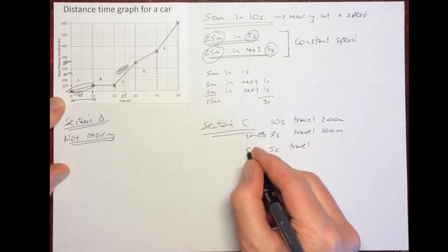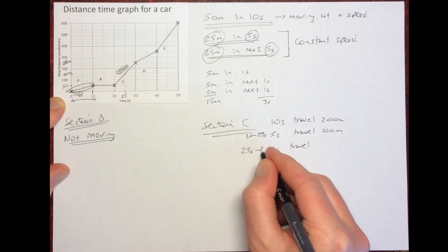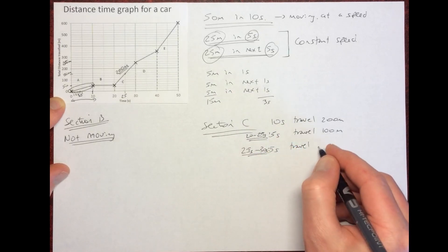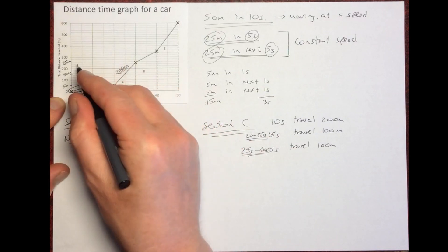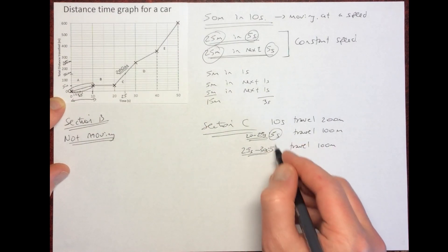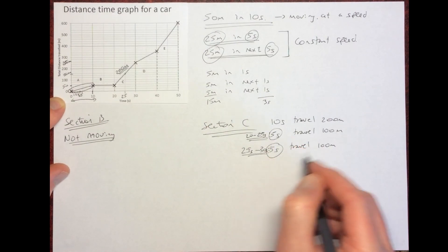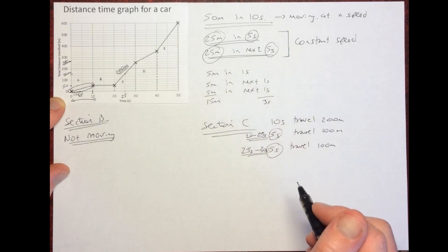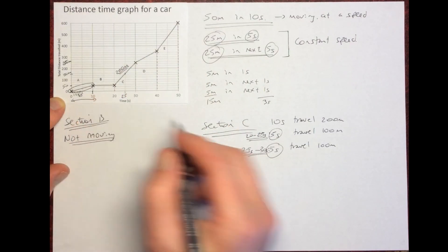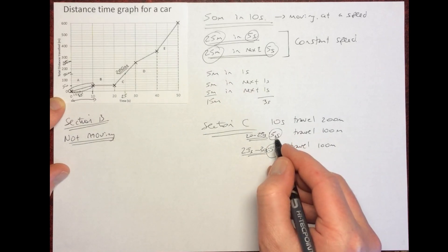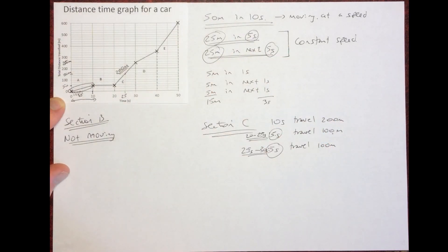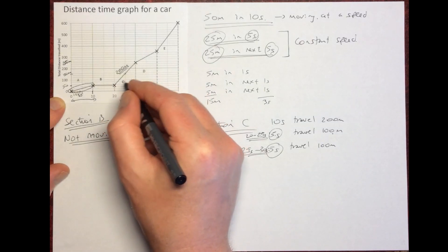From 25 to 30 seconds, we travel another 100 meters, from 150 up to 250. So we're traveling equal distances — 100 meters — in each five-second period, and 200 meters over the full 10 seconds. This confirms we're traveling at a constant speed. Comparing to section A, this is a faster constant speed: here we travel 100 meters in five seconds, whereas in section A we only traveled 25 meters in five seconds.